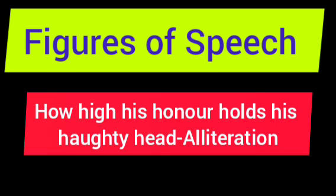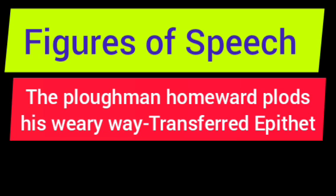Now let's see alliteration. The example: 'How high his honor holds his haughty head.' This is alliteration — when there is repetition of the same consonant sound. In this example, the 'H' sound is being repeated. In Hindi it is called Anupraas Alankar.